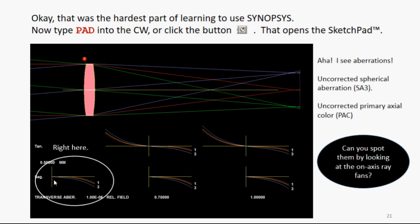If you look at these curves, it's in focus at the center of the aperture, but the edge of the aperture is out of focus, and that's spherical aberration. And you notice the colors one and three, that's the red and the blue, are separated. That's the axial color.